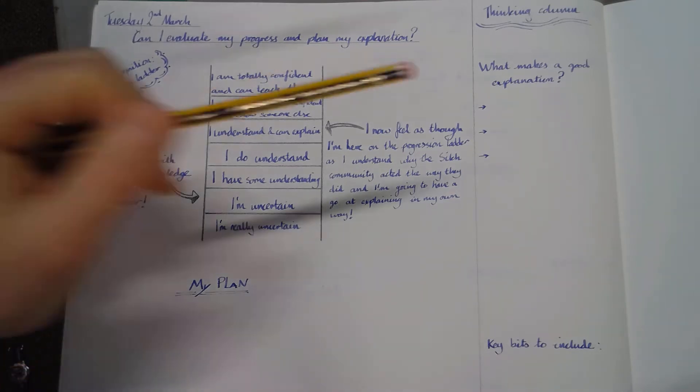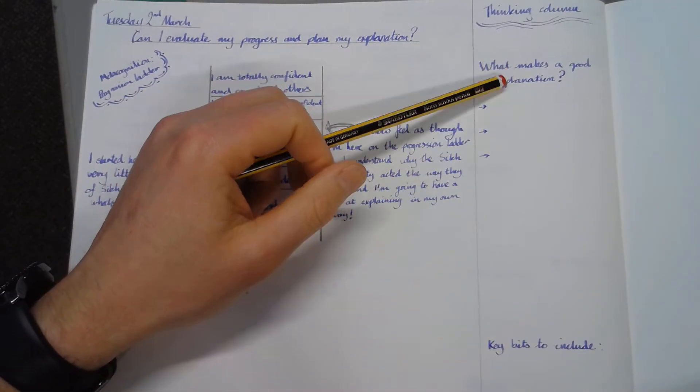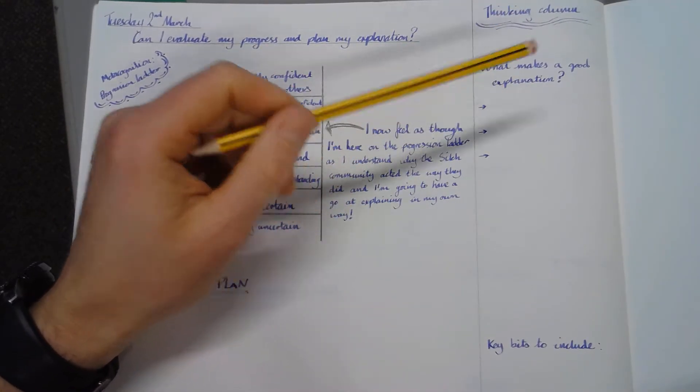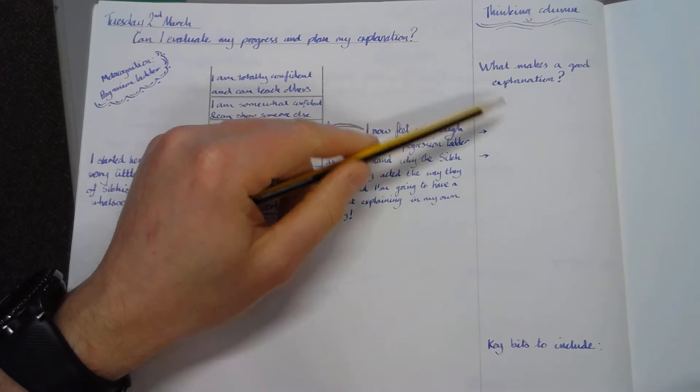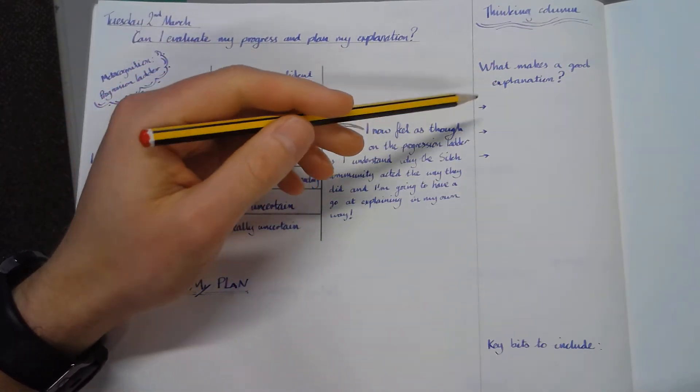A couple of things to include in my thinking column. What makes a good explanation? So if we're doing an explanation, what are you going to include in it that's going to make it really high quality? How are you going to make this an amazing explanation?